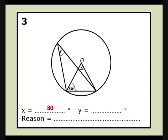For y, we have our arrowhead in one of its disguises. x is the angle at the centre, and y is the angle at the circumference, so y is half of x. y is 40 degrees, therefore, and our reason is that the angle at the centre is double the angle at the circumference.